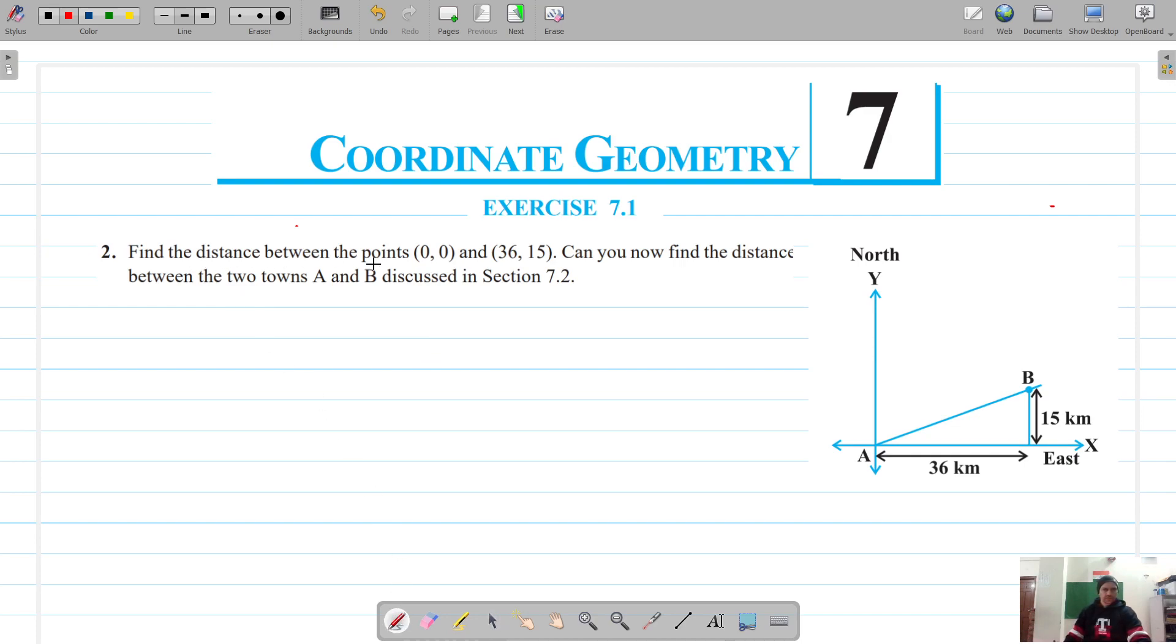So for question number 2, we have to find the distance between these points. So let's try to solve the first section of this question. Let these points be A(0,0) and B(36,50).